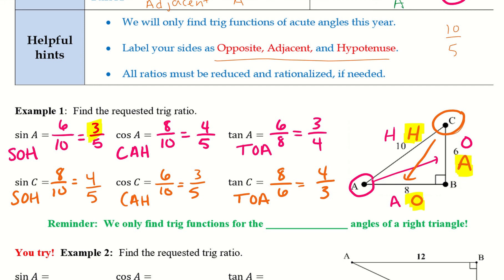There are some fun patterns if we look at all of our final answers. Sine of A and cosine of C are the same value, and sine of C and cosine of A are the same value — they are related, just swapped between sine and cosine. With tangent, all it does is flip the fraction: tangent of A is 3 over 4, and tangent of C is 4 over 3. Once you get used to this, you can start recognizing those relationships.